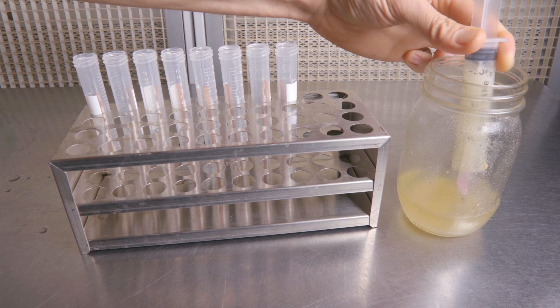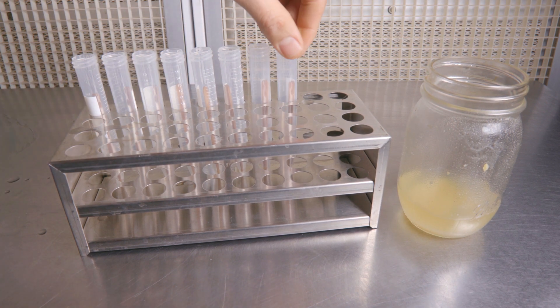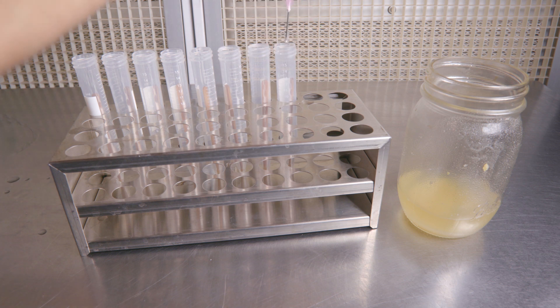This step must be done in front of a flow hood or in a still air box. But if you don't have either, you can pre-fill your slants and then sterilize them. Just keep in mind that the pressure during the sterilization cycle may cause your media to boil out of your slants.